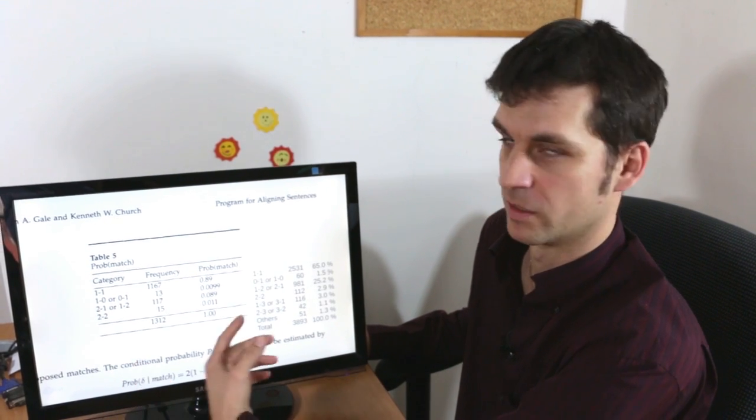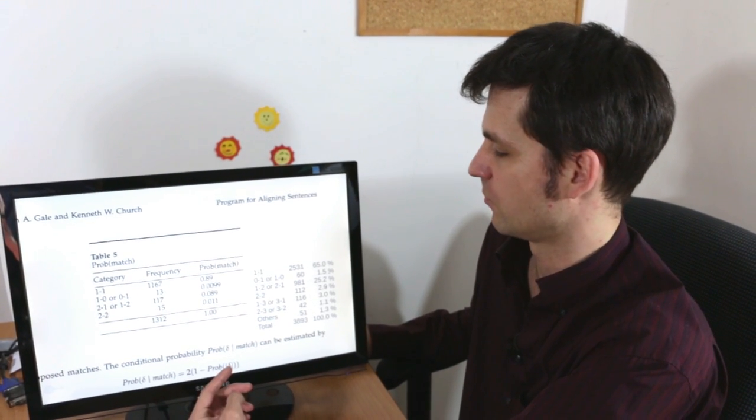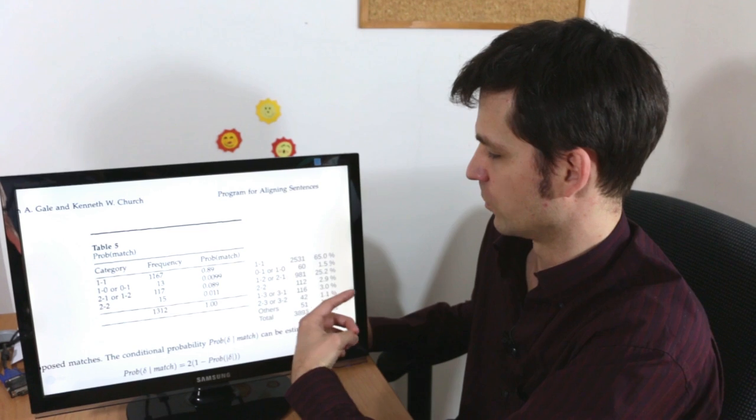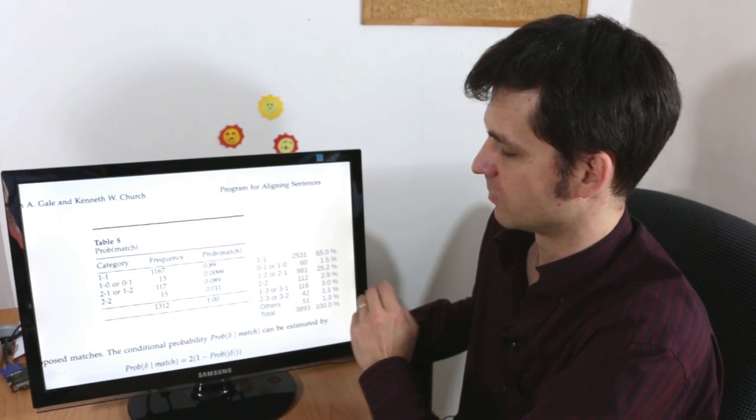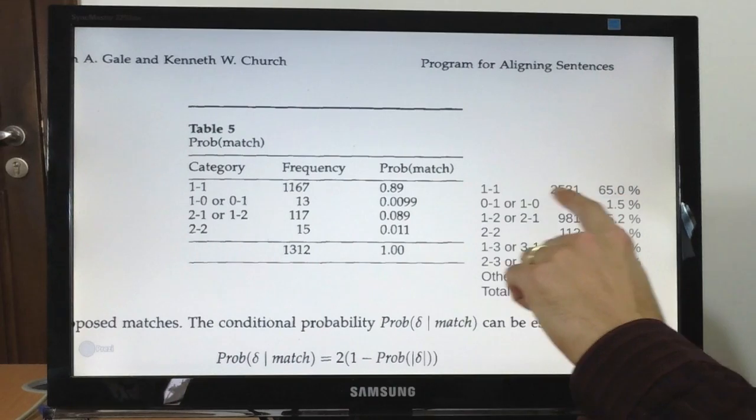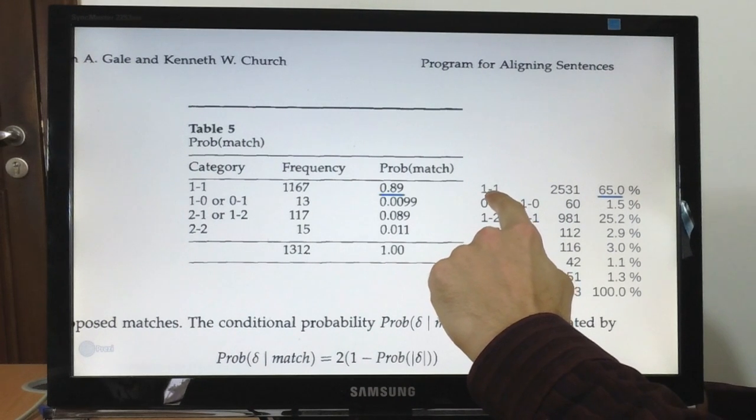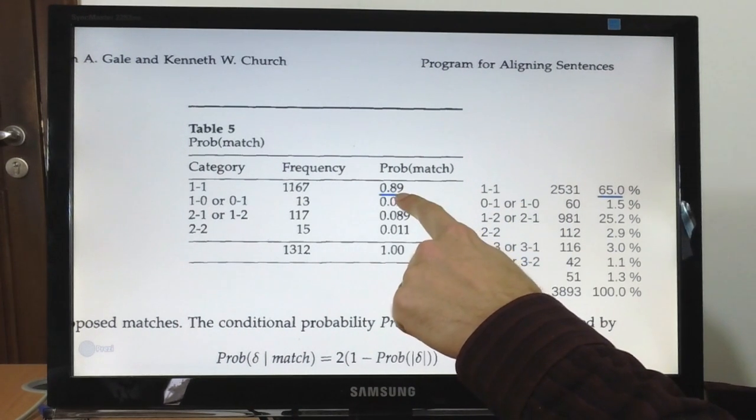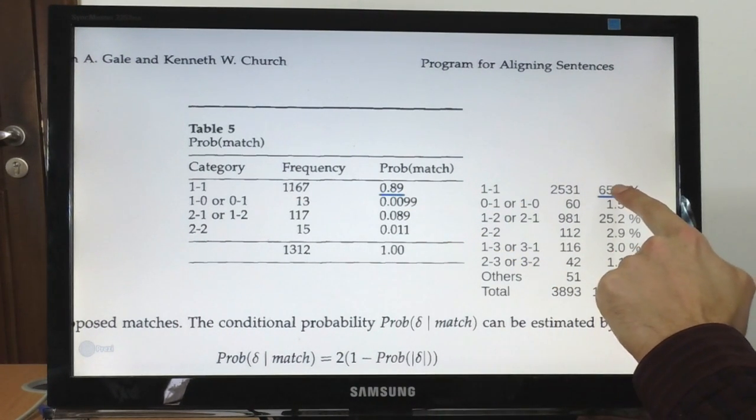In our empirical data in the English Hindi text that we have seen before we see that the probabilities are distributed slightly differently. Our best case is again one to one sentence alignment but it doesn't cover 90% of cases but rather only 65% of cases.